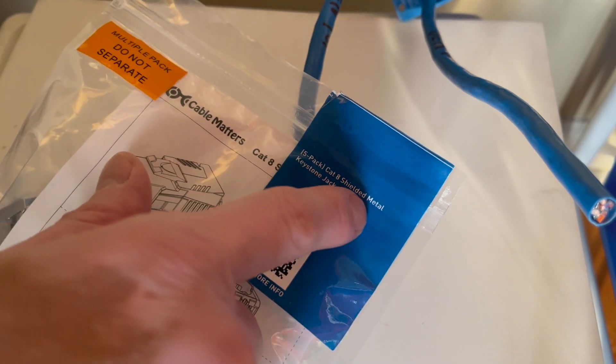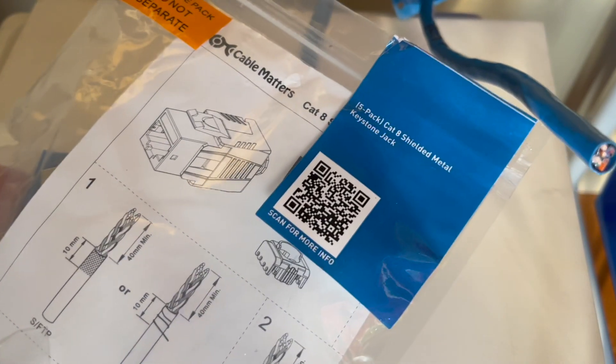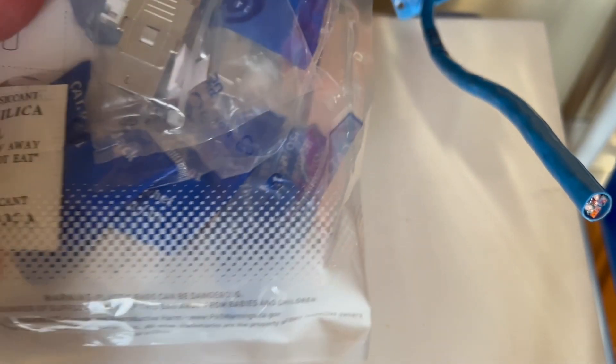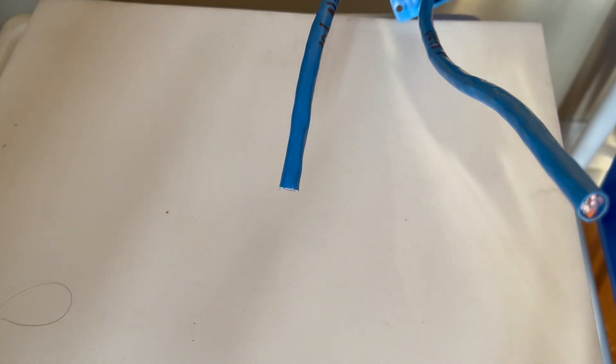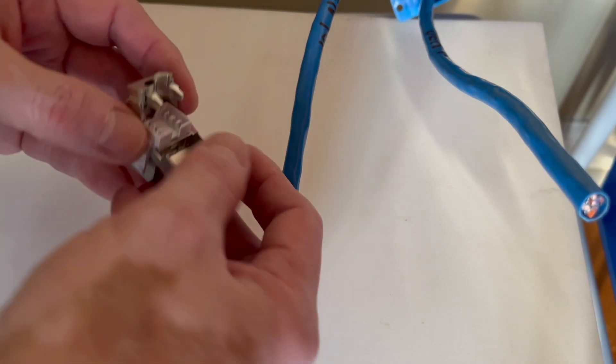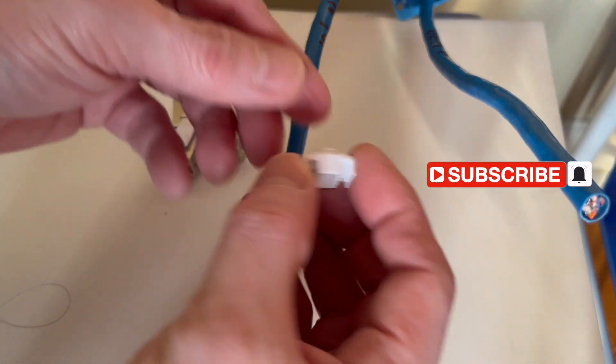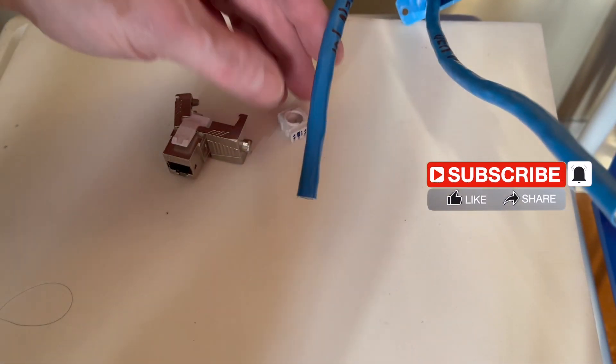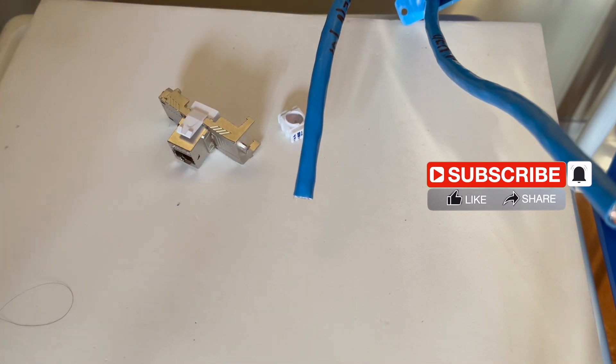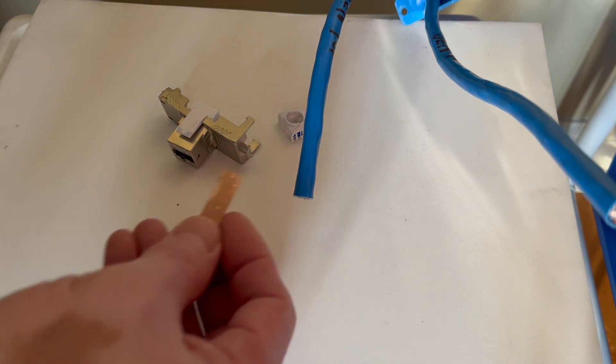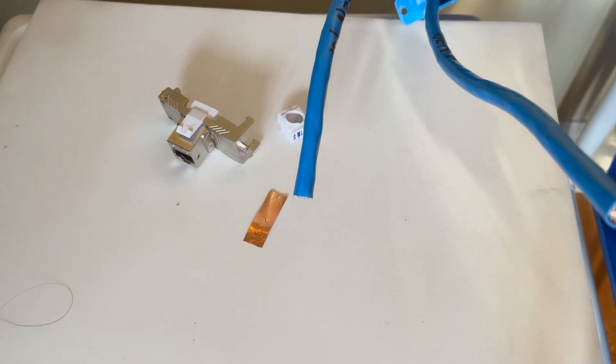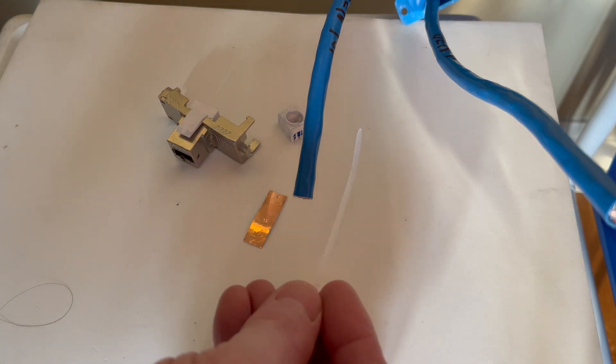Keystone jack shielded metal for cable 8, and it contains this guide where you insert the wire, and the copper and the cable tie.